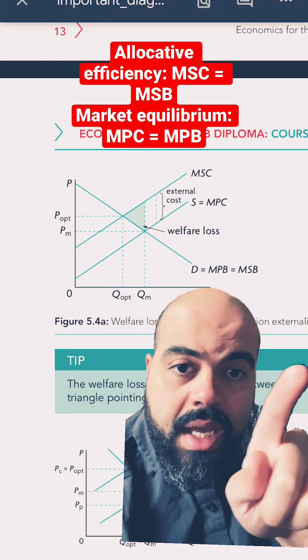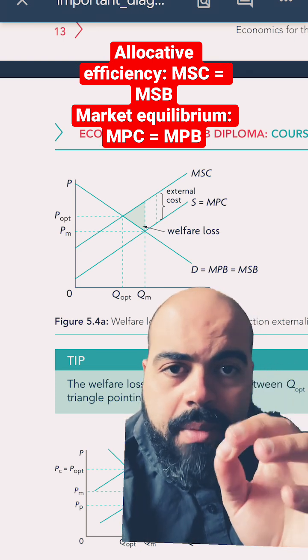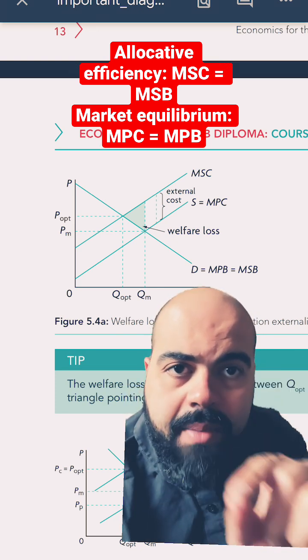OK, so remember, the intersection of MPB and MPC is the market equilibrium, while the intersection of MSC and MSB is the socially optimal point.